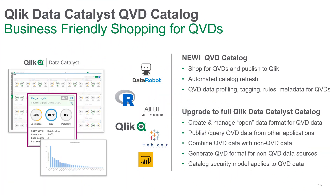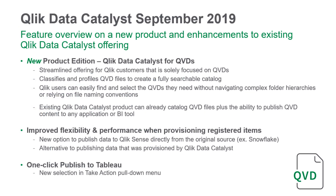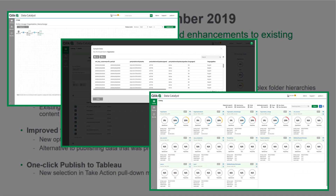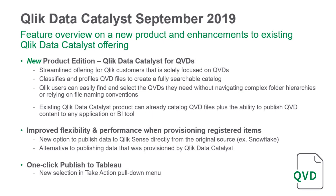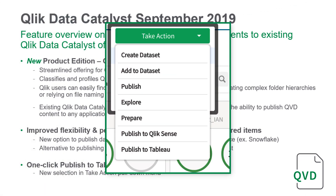In the June release, we expanded the capability of Qlik Data Catalyst to understand QVD files, so it can catalog and profile QVDs, as well as publish the content of a QVD to any application or BI tool. Now, Qlik customers can take advantage of this capability with a new streamlined offering of Qlik Data Catalyst that is solely focused on QVDs. Qlik Data Catalyst for QVDs is an entry-level offering with simplified installation and administration that classifies and profiles QVD files to create a fully searchable catalog, making it easy for Qlik users to find and select the QVDs they need without navigating complex folder hierarchies or relying on file naming conventions. In addition, the full-featured Qlik Data Catalyst product for September 2019 contains a number of enhancements, including a one-click publish to Tableau function.